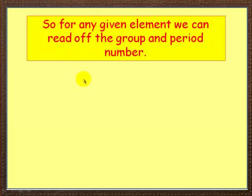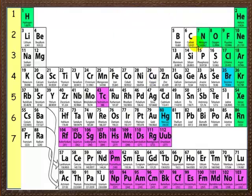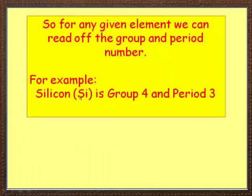So what we can do for any given element, we can read off the group and period number. Let's go back a second, so you can see here, say we chose sulfur for example, we could say what is its group and period or, let's look at silicon. Now silicon, as you can see, is in group 1, 2, 3, 4 and in period 1, 2, 3. Just check it, you have silicon in group 4 and period 3.